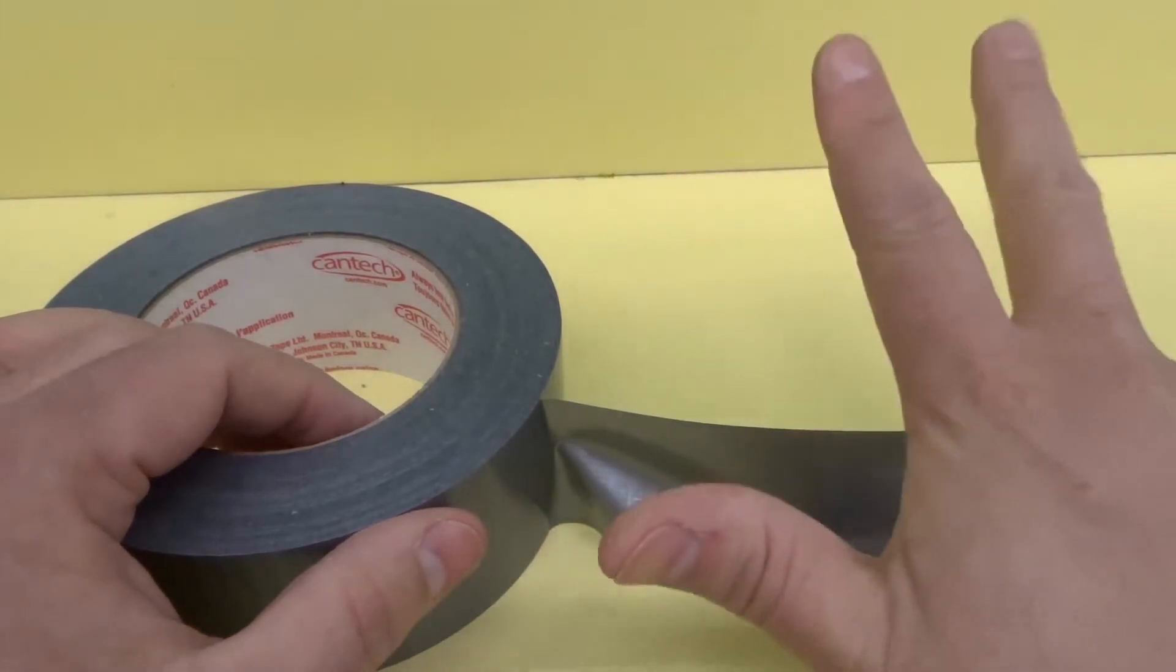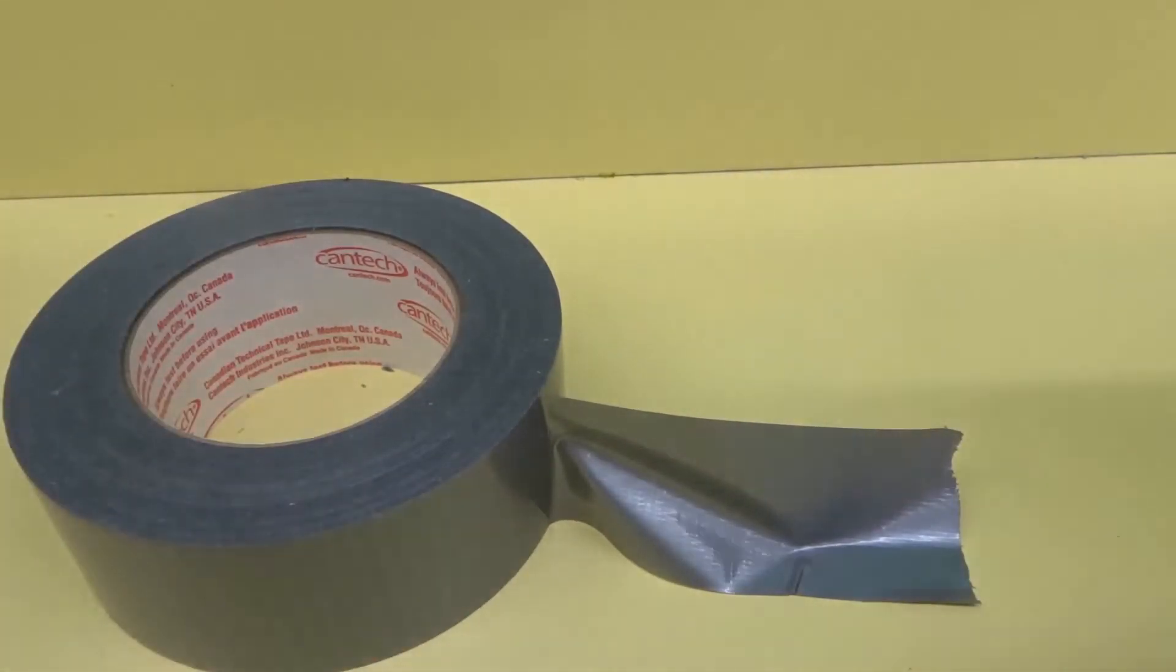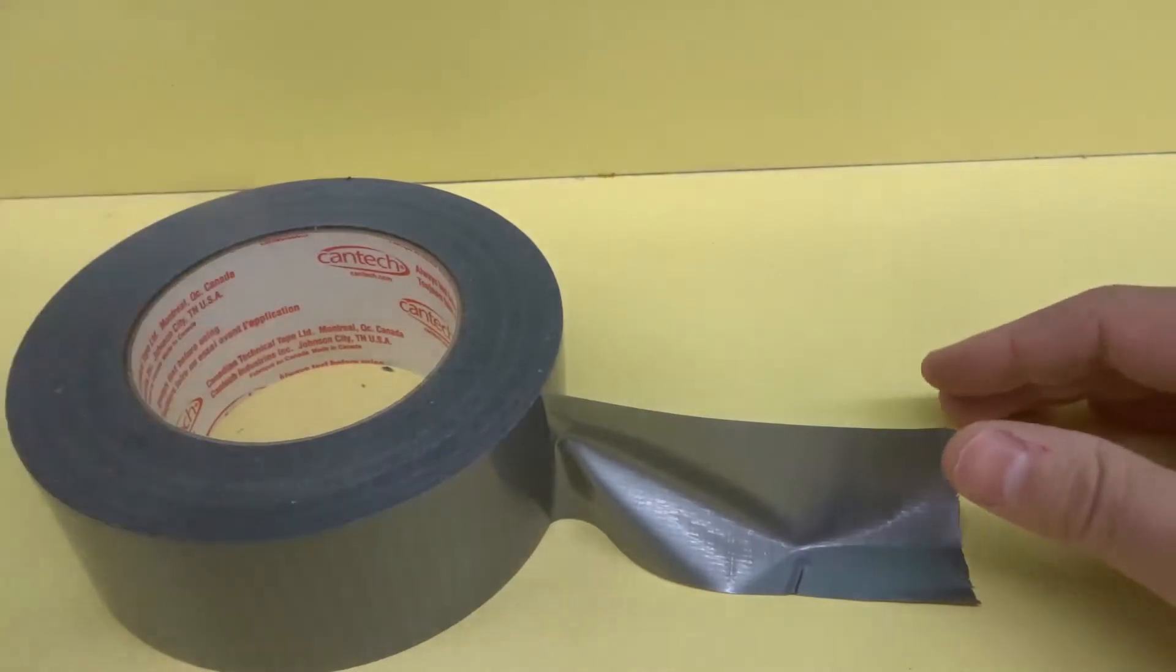So there are essentially three main components of duct tape and each of those three components when combined together makes it so strong.